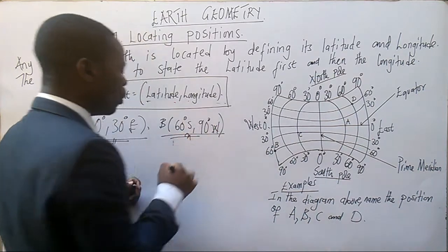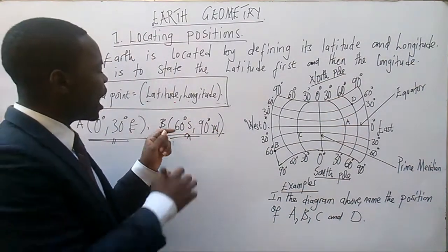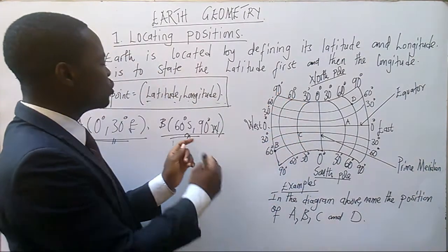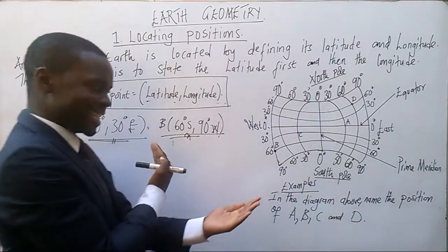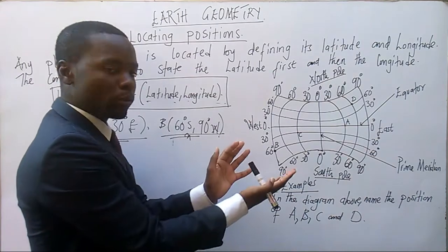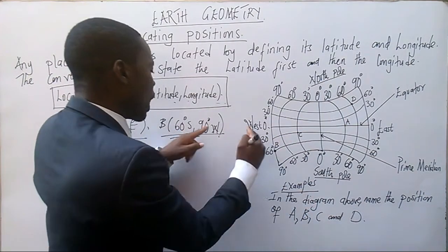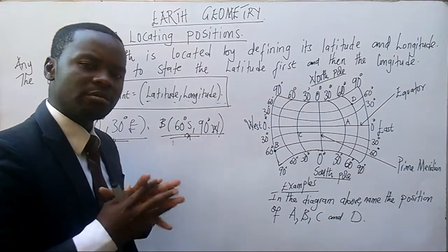Now, why are we having south and west? The reason why we are having south is because B is below the equator. The reason why we are having west is because B is on the west side of the globe. So we have got S because it's on the south, W because it's on the west part. Hope you are getting me there.